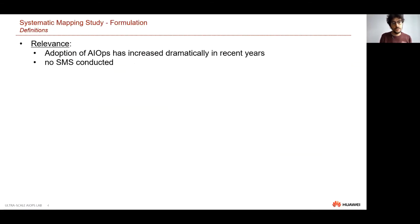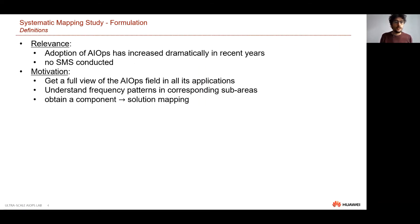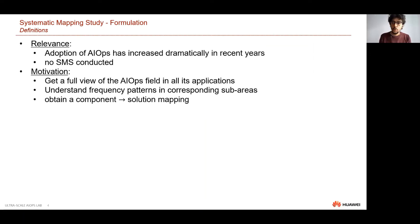Starting from formulation: it's particularly relevant to structure AIOps, and a systematic mapping study is well motivated because the adoption of AIOps has increased dramatically and there has never been a systematic mapping study done in this field. From a motivation perspective, we want a full view of AIOps to understand frequency patterns in individual sub-areas, and from an application perspective we want a component-to-solution mapping so that when we want to improve a specific functional component in our IT environment, we know exactly what solutions to look into.